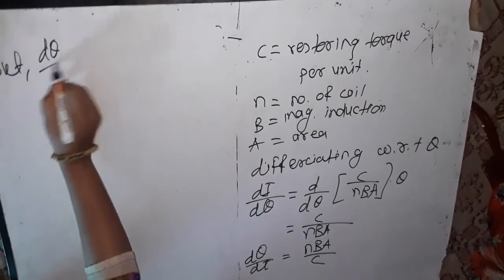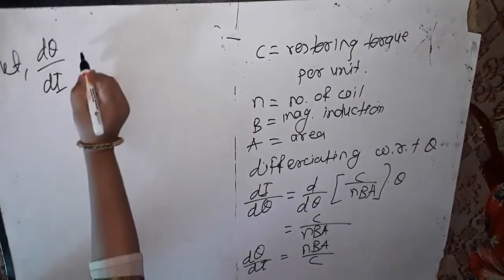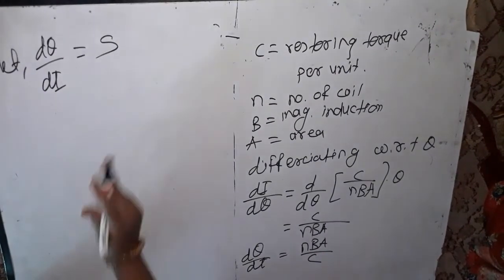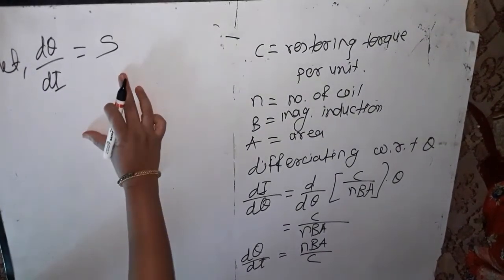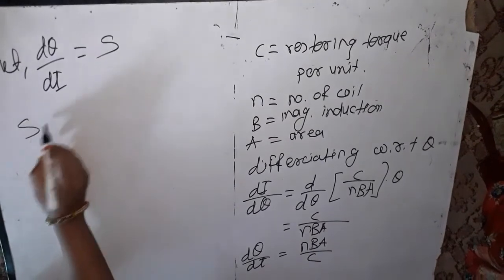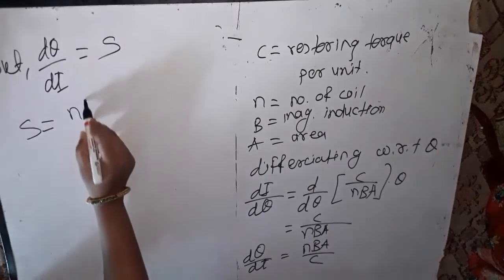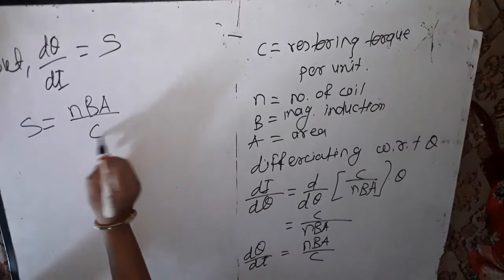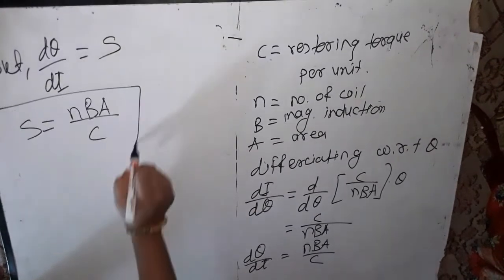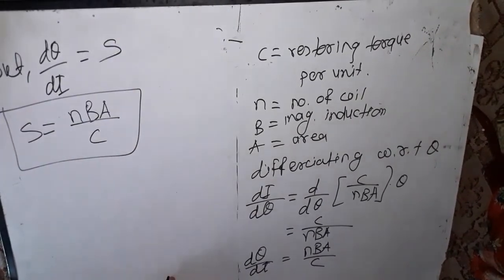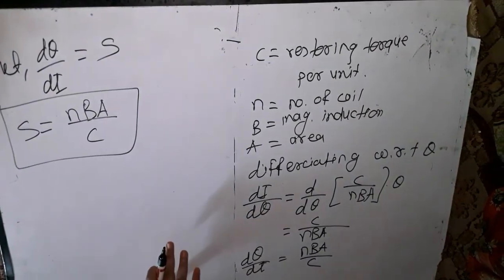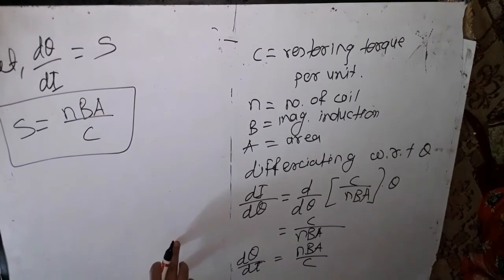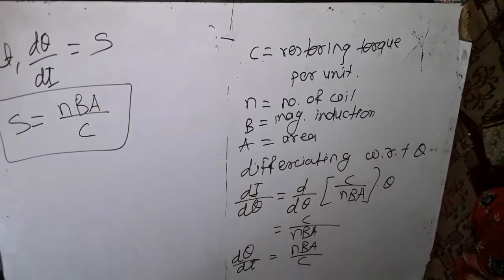So the sensitivity S = dθ/di = nBA/c. This equation is known as the expression for the sensitivity of MCG, and this completes the topic — worth three marks.